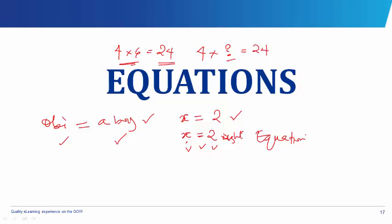How do you find this unknown? To find it, you divide both sides by the known value, which is 4. So divide by 4 on both sides. The aim is to make this side 1, so this cancels this, and you have 6. So the question mark is 6.